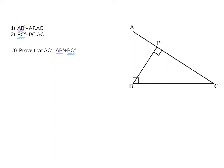So if I start with my right-hand side, AB squared plus BC squared, I can now substitute AB squared with AP times AC, and I can substitute BC squared with PC times AC.